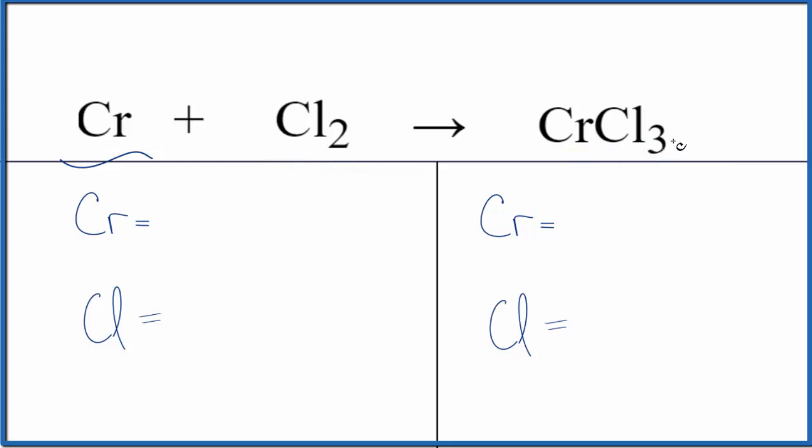So the first thing we do when we're balancing equations, we count the atoms up. One chromium and two chlorine atoms. On the product side, we have one chromium and three chlorine atoms.